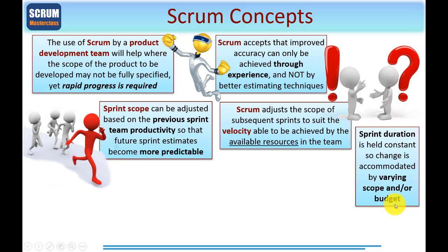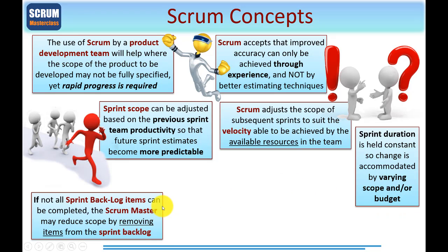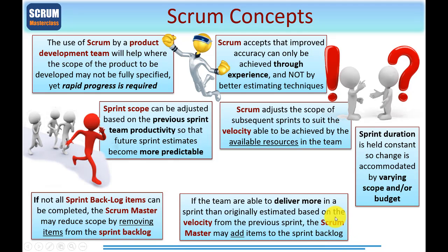We'll be covering that in detail in later modules. If not all of the Sprint backlog items can be completed, then the Scrum Master or maybe the Product Owner may reduce the scope by removing some items from the Sprint backlog. Those removed parts may be added back into Sprint planning for the next Sprint, or they may be modified in some way. On the other side of the coin, if the team were able to deliver more in a Sprint than was originally estimated based on velocity from the previous Sprint, the Scrum Master may add items to the Sprint backlog.